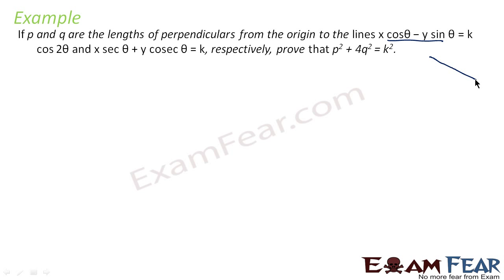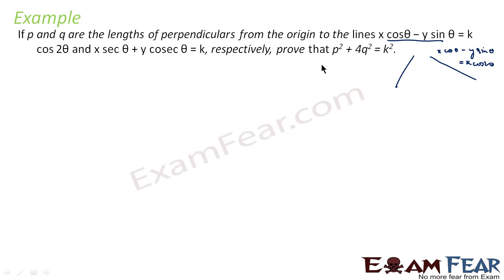Let's draw the lines first. The first line is x·cosθ − y·sinθ = k·cos2θ. The second line is x·secθ + y·cosecθ = k.